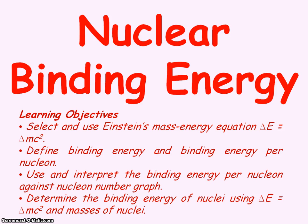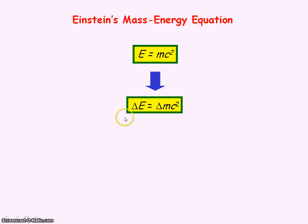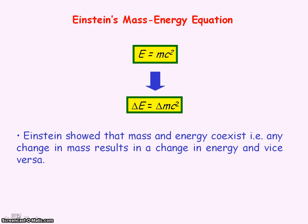We're going to be looking at nuclear binding energy. But first we're going to look at Einstein's most famous equation, E equals mc squared, which is known as the mass energy equation. We're going to look at it in the form where the change in energy equals the change in mass times the speed of light squared. This equation shows that mass is a form of energy, so you can convert mass into energy and also convert energy into mass.